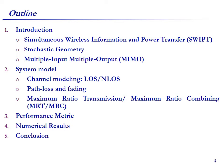Here is an outline of my presentation today. I start with a brief introduction about Simultaneous Wireless Information and Power Transfer, SWIPT, and then move to stochastic geometry and Multiple Input Multiple Output, MIMO. Next, I move to the system model, focusing on the link state model with either LoS or NLoS, the path-loss model, beamforming, and maximum ratio transmitting and maximum ratio combining schemes. Then I present the performance metrics and the final mathematical framework, followed by numerical results, and conclude my talk.